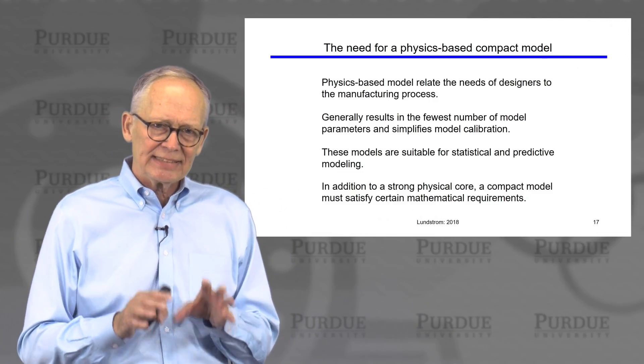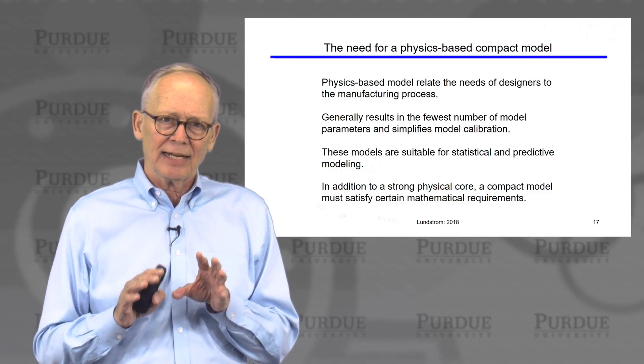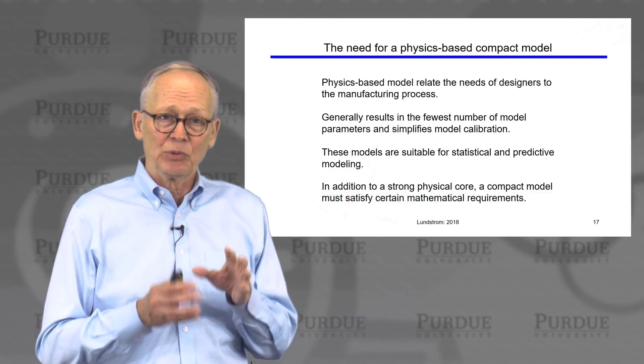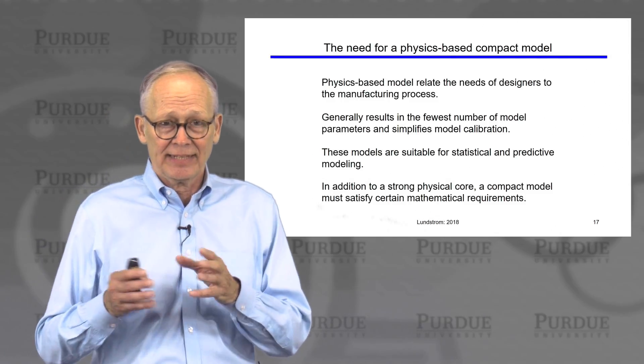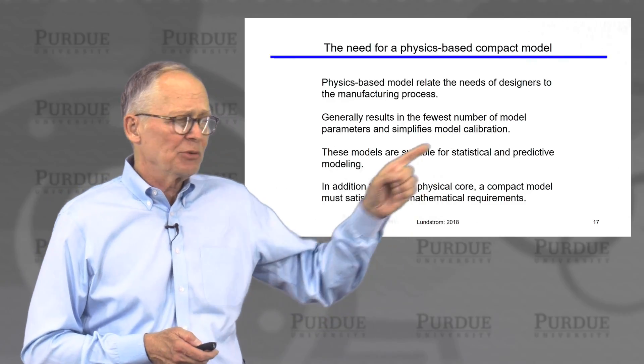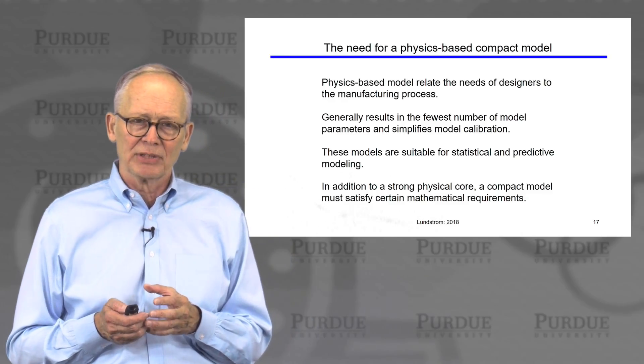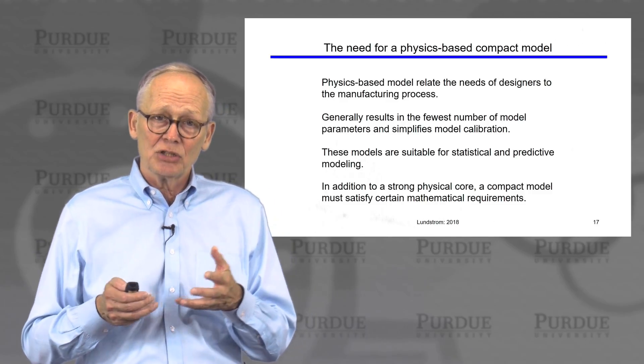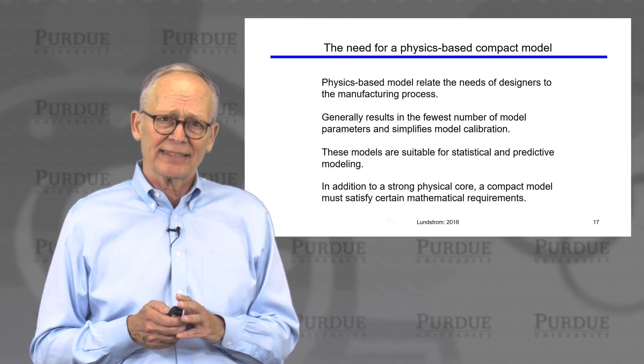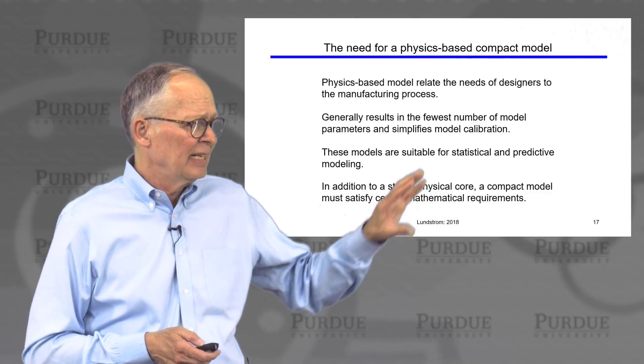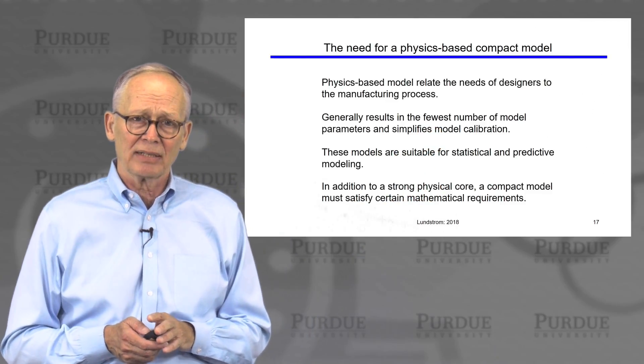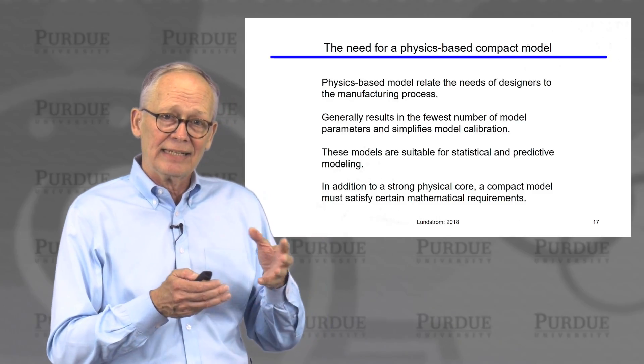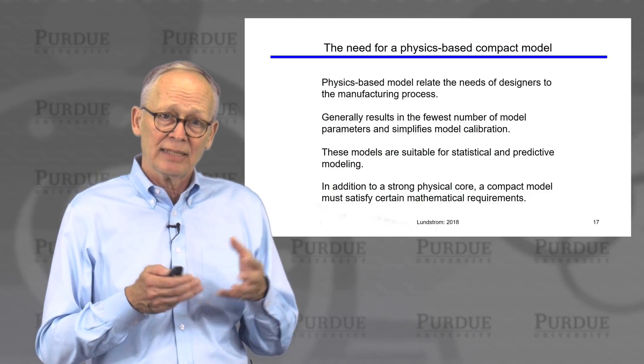I mentioned earlier that there are these physics-type compact models. Generally, we would like a compact model used for circuit design to be physics-based. One of the reasons is it relates the needs of designers to the manufacturing process - things like the gate oxide thickness or the doping density. Generally, it results in models that have the fewest number of fitting parameters. So it isn't simply curve fitting, it's fitting some equations that have strong physical significance. So we can usually get by with fewer fitting parameters. It simplifies the calibration of a model to a particular manufacturing process. These models are also best for statistical and predictive modeling. If my manufacturing process has some fluctuation in gate oxide thickness, then I can use my models to assess what are the impacts of those fluctuations on the performance of the circuits that we produce.